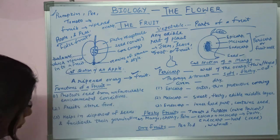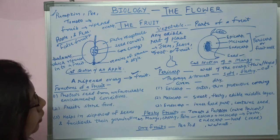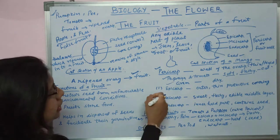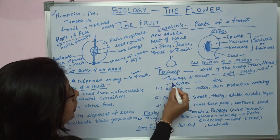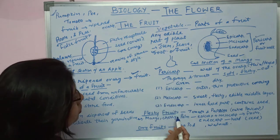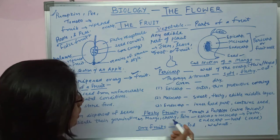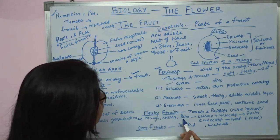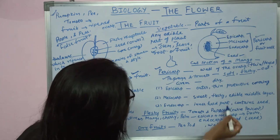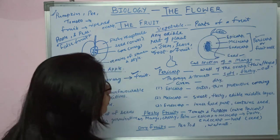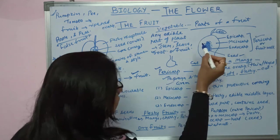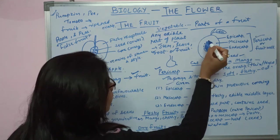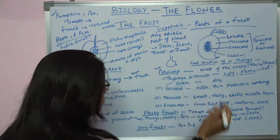In fleshy fruits like tomato and papaya, the whole pericarp — including epicarp, mesocarp, and endocarp — is very soft and fleshy. But in the case of mango, cherry, and palm, the epicarp and mesocarp are fleshy, but the endocarp is hard and encloses the seed inside it.